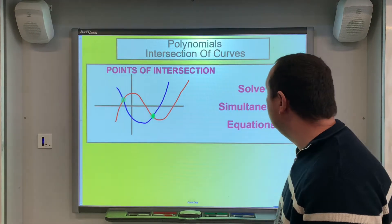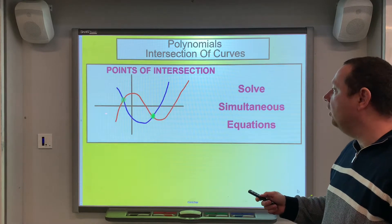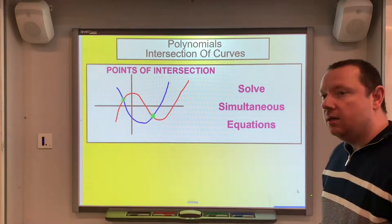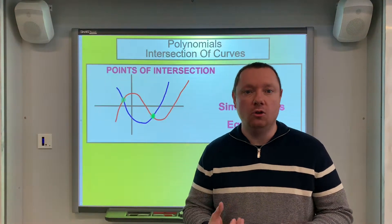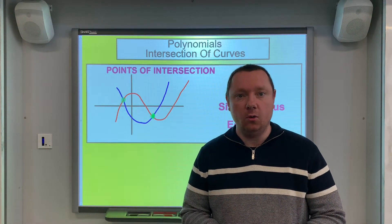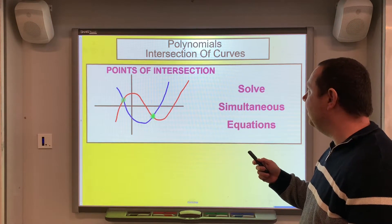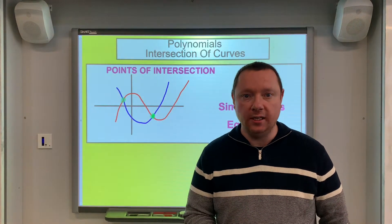Mr. Clown here, Clown Maths. Today we're going to be looking at polynomials again and the intersection of curves. If we take two curves, maybe two polynomials — a cubic and a square — where is the point of intersection? Whenever you're trying to find a point of intersection between two things, whether it's a curve and a line or two curves, you substitute one curve into the other and solve the equation simultaneously — solving simultaneous equations.